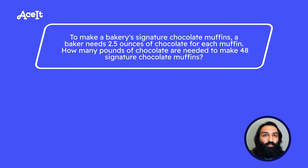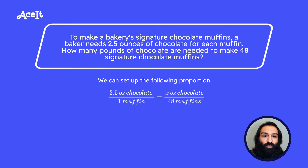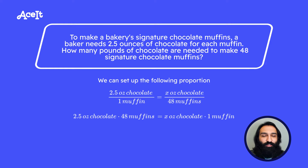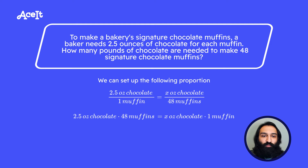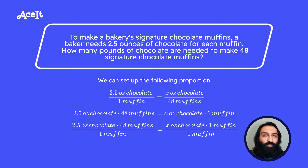First, we set the proportion in terms of 2.5 ounces of chocolate to 1 muffin. The proportion is equivalent to the unknown value of x ounces of chocolate to 48 muffins. To find out what x is, we can cross-multiply to get 2.5 ounces × 48 muffins = x ounces × 1 muffin. Since we want to find x, we divide both sides by 1 muffin to get x ounces of chocolate by itself.